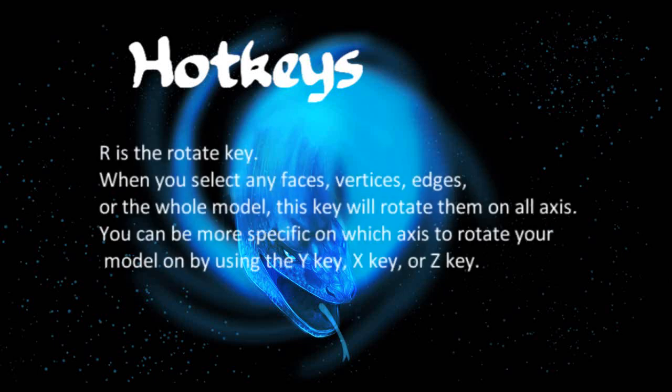R is the rotate key. When you select any faces, vertices, edges, or the whole model, this key will rotate them on all axes. You can be more specific on which axis to rotate your model on by using the Y key, X key, or Z key.